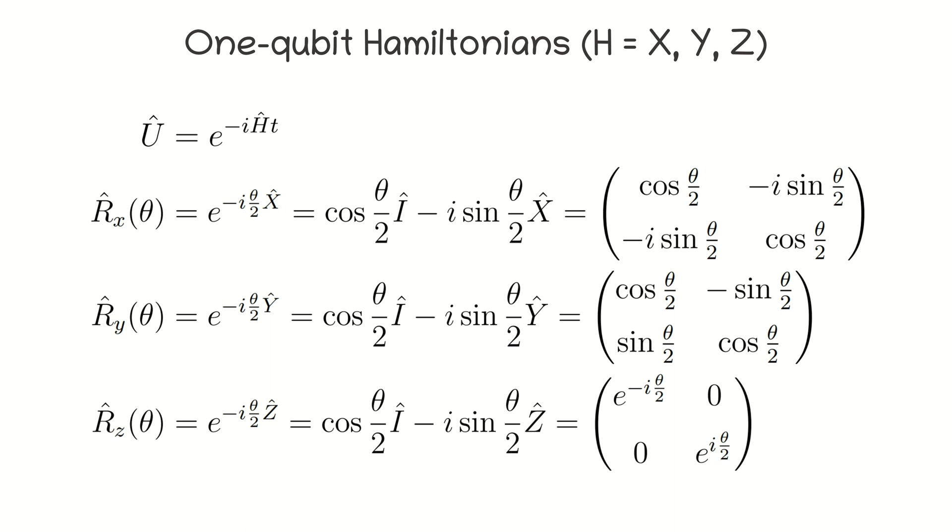One-qubit Hamiltonians. Let us start with the one-qubit case. In other words, when a Hamiltonian is formed by one of the Pauli operators. This example is explained in detail in the video about the evolution under the action of Pauli operators. The evolution operator is just a corresponding rotation operator.